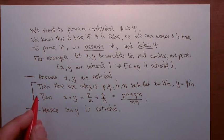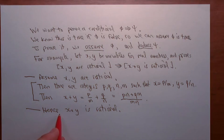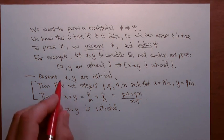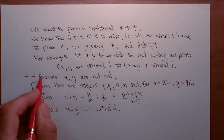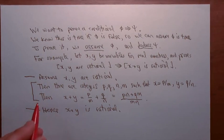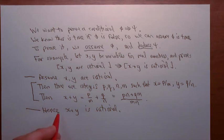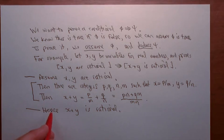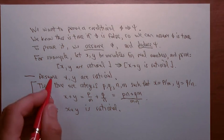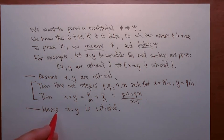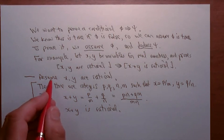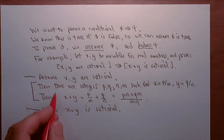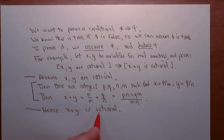All three steps are important: declare the assumption, carry out the reasoning in a clear and understandable fashion, and then state the conclusion when you've reached it. Remember that proofs have two purposes — to convince yourself and to convince other people. Even for your own purposes, it's good to write down what your assumptions are, because a week from now you'll forget exactly what you were doing. From a communicative angle, it's important to state the assumption, lay out the reasoning simply, and state the conclusion.